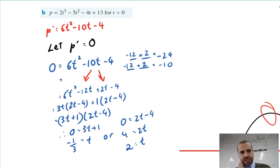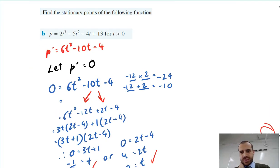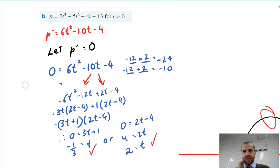So I did some factorizing off screen and we get t equals negative one third or t equals two. And they are my stationary points. So what can I say? At the moment, I can only say this.